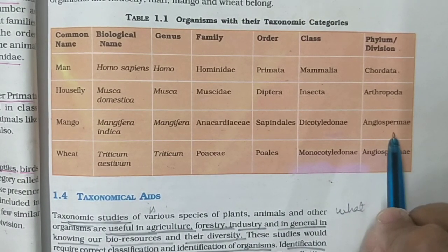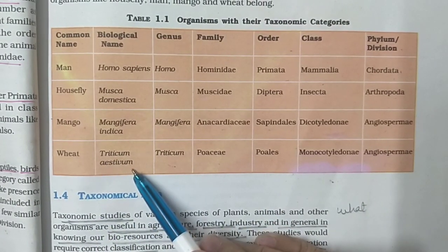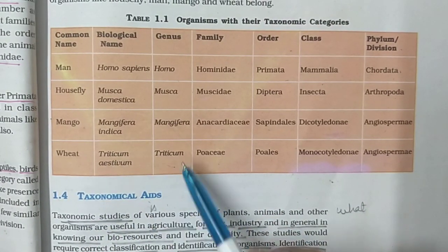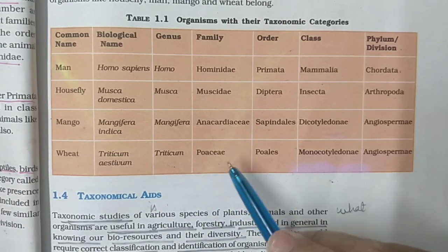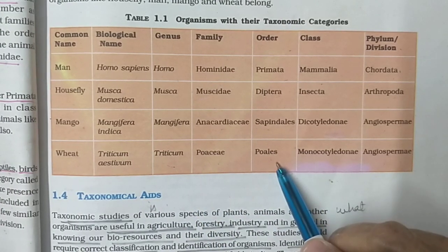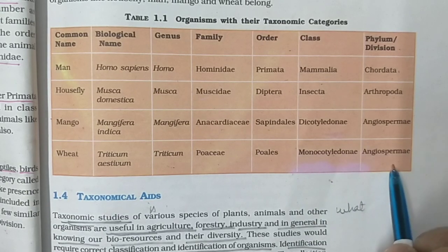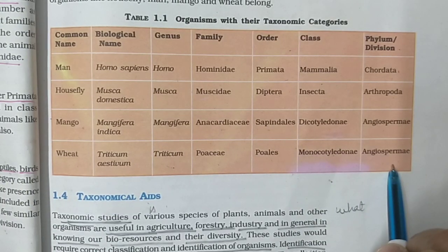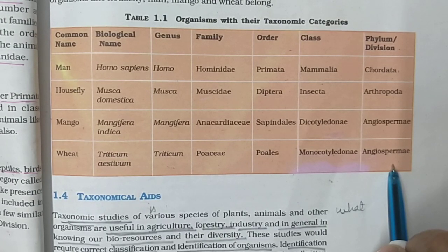For mango I said division, not phylum, because it is a plant. For wheat: Triticum aestivum, genus Triticum, family Poaceae, order Poales, class Monocotyledonae, division Angiospermae. I hope you have understood about the different taxonomic categories.